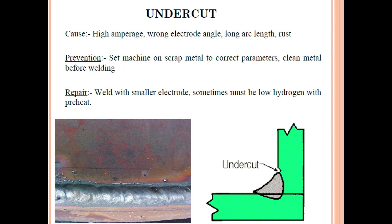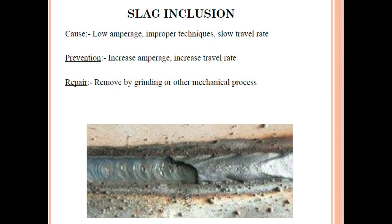The first defect is slag inclusion. Slag covers the weld due to oxidation or to stabilize the arc. The causes are low amperage, improper technique — such as wrong polarity (DCEP or DCEN) — and slow travel rate. Prevention: increase the amperage and increase the travel rate as per the WPS. If slag is not properly removed between runs, it becomes trapped in the next pass. Repair: remove by grinding or mechanical process.